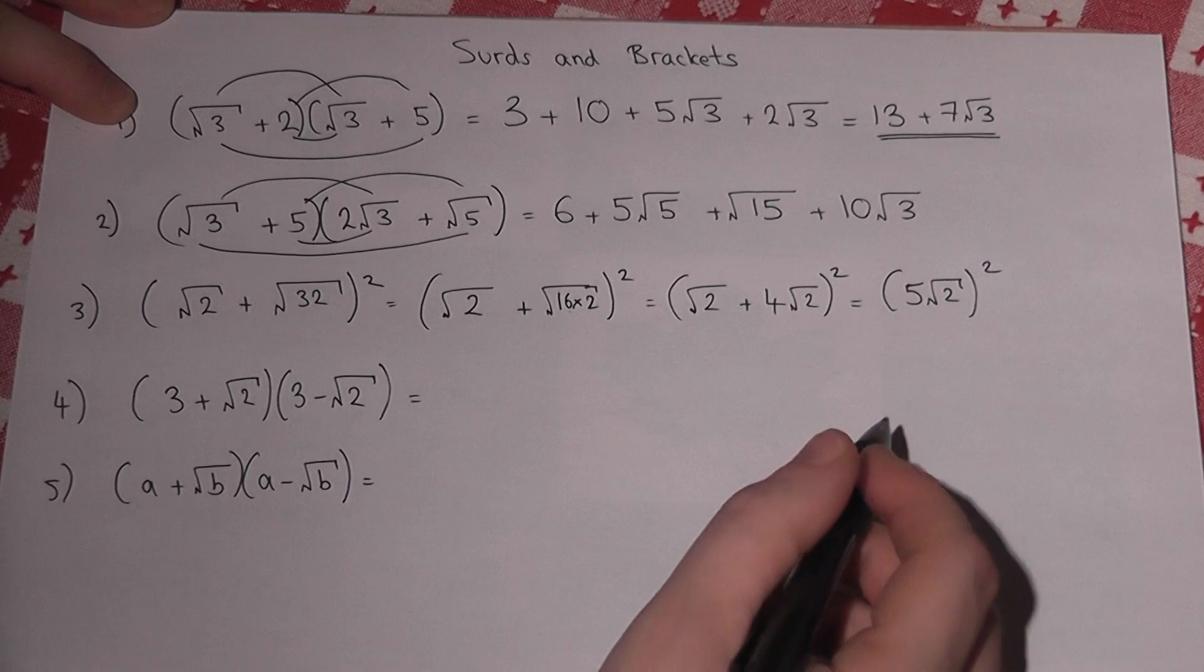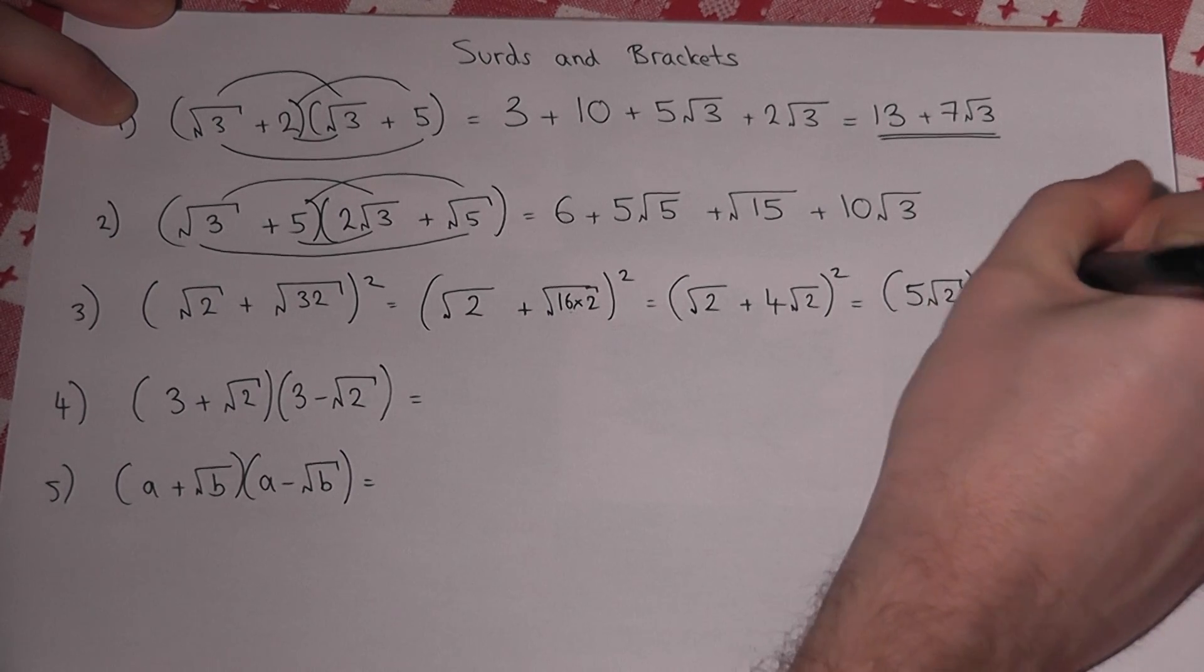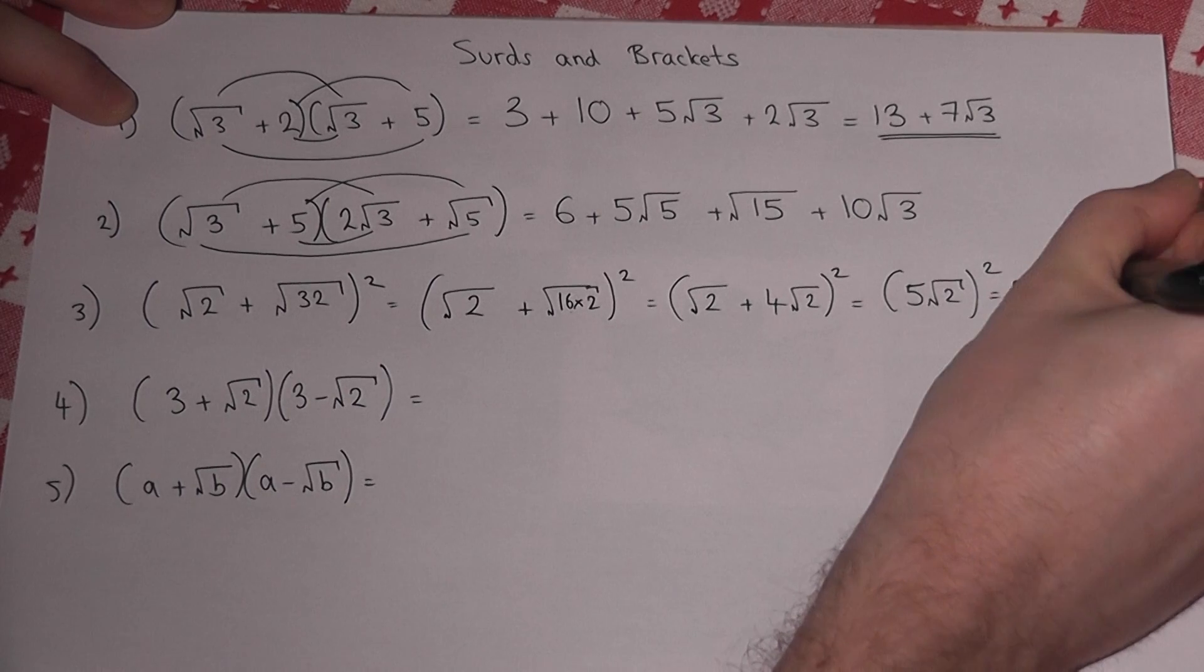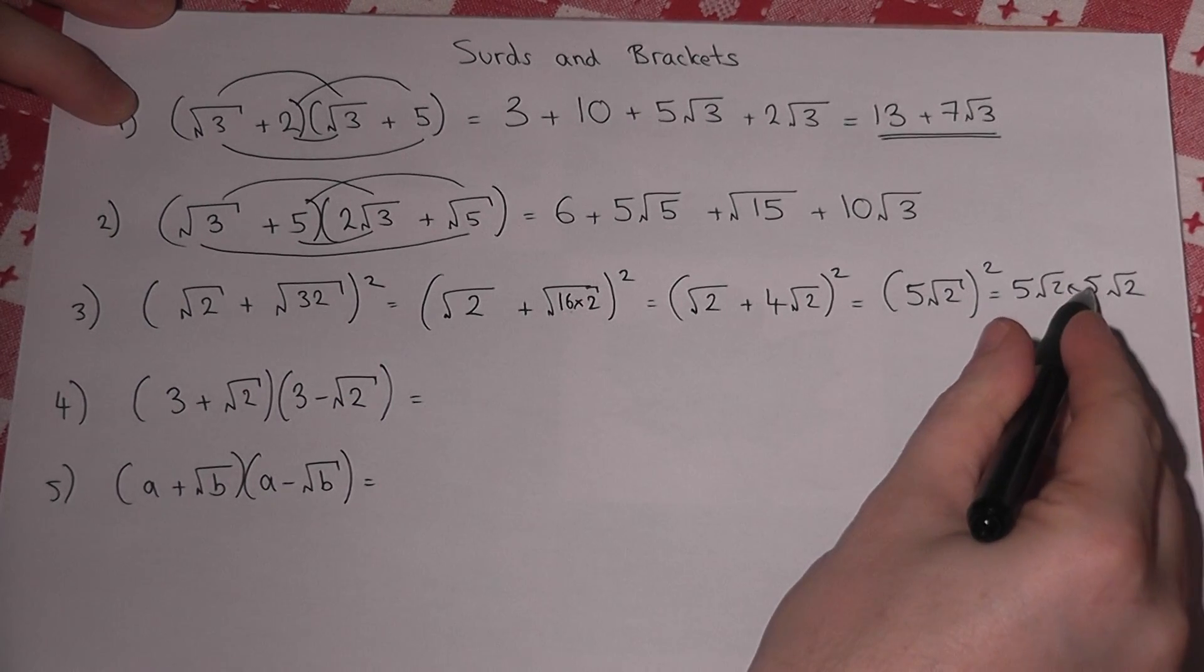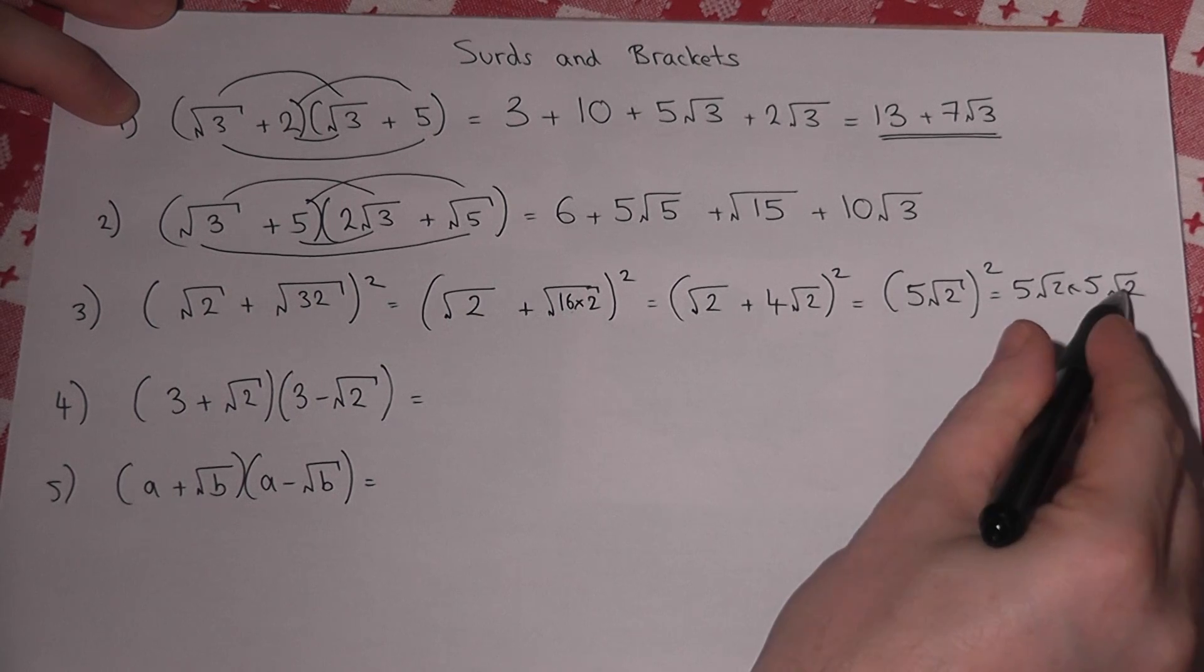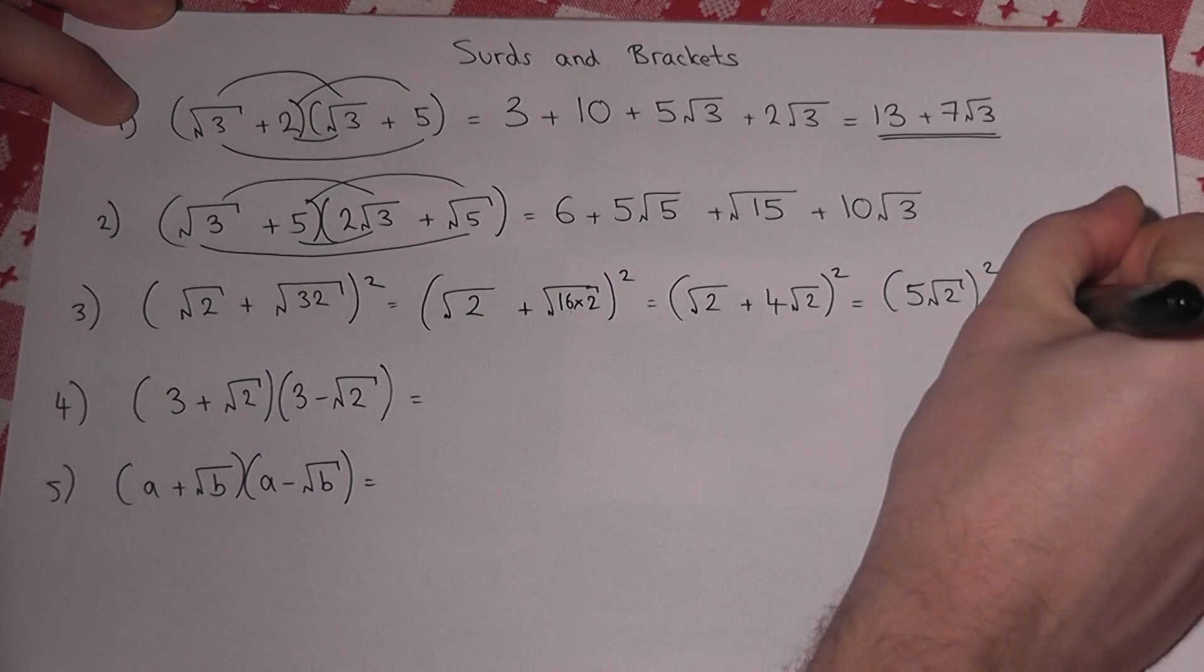This just equals 5 root 2 times 5 root 2. Well, 5 times 5 is 25, root 2 times root 2 is 2, so 25 times 2 equals 50.